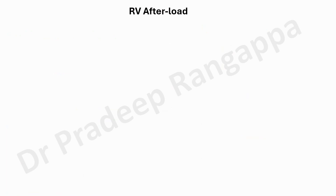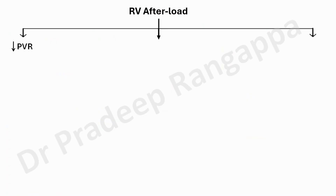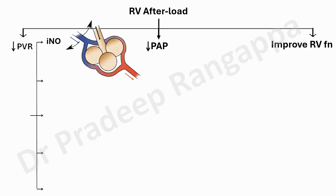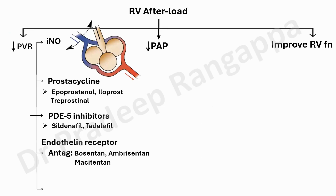When a patient in ICU has PA pressure more than 80 in stage 4, as an intensivist you are meant to reduce RV afterload. There are three main categories: reduce pulmonary vascular resistance, reduce pulmonary artery pressure, and improve RV function. In ICU one can use inhaled nitric oxide, prostacyclin, phosphodiesterase inhibitors, or endothelin receptor antagonists. Most importantly, if someone has PAH, they are candidates for oxygen — hypoxemia worsens pulmonary vasoconstriction.